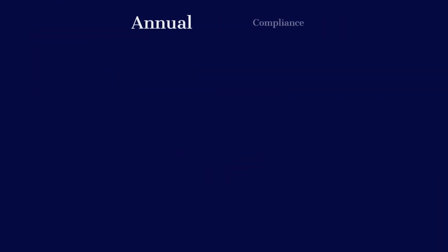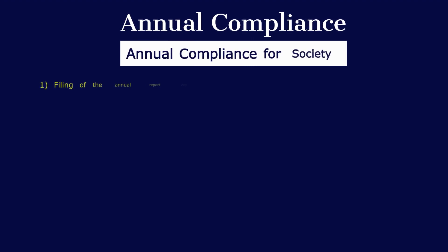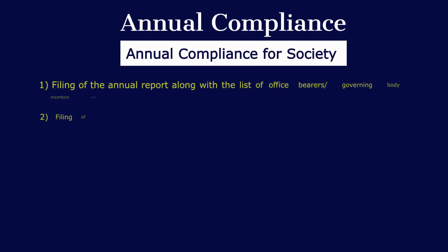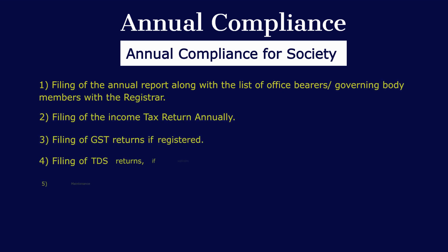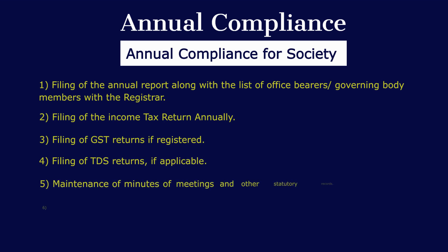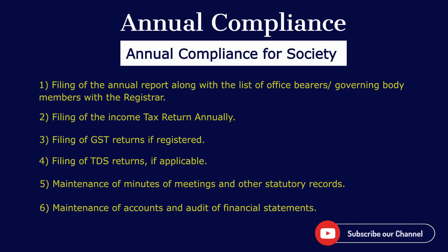Annual compliance for a Society includes: 1) filing of the annual report along with the list of office bearers and governing body members with the Registrar; 2) filing of income tax return annually; 3) filing of GST returns if registered; 4) filing of TDS returns if applicable; 5) maintenance of minutes of meetings and other statutory records; 6) maintenance of accounts and audit of financial statements.